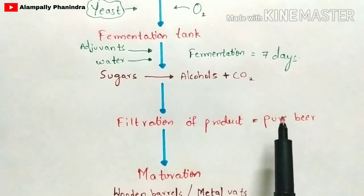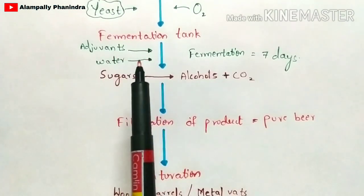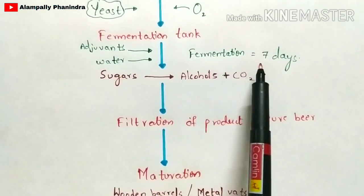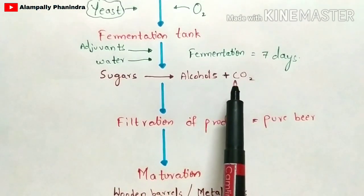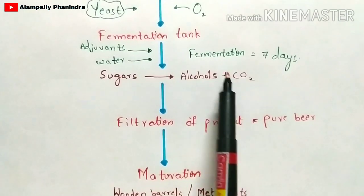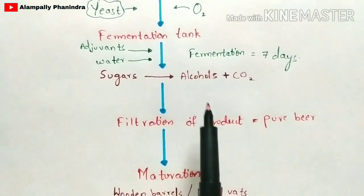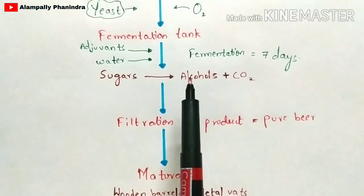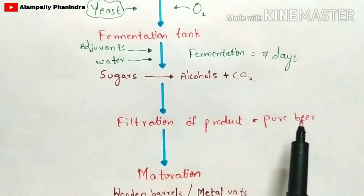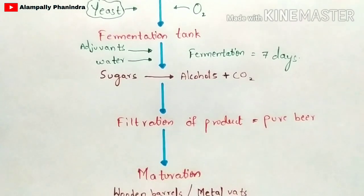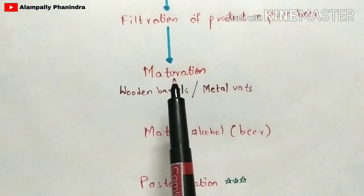After seven days of fermentation, you open the outlet tap of the fermentation tank. The beer obtained is in an impure form, so it undergoes filtration such that pure beer is obtained. The next step performed is maturation.